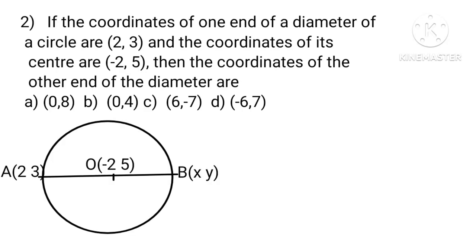In the figure, O is the midpoint of AB. Therefore, X plus 2 whole upon 2 equals minus 2 implies that X equals minus 6. Similarly, Y plus 3 whole upon 2 equals 5 implies that Y equals 7. Hence B is 6, 7.